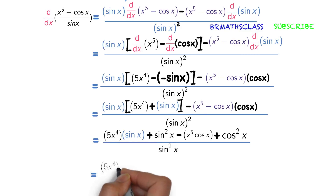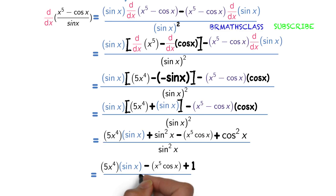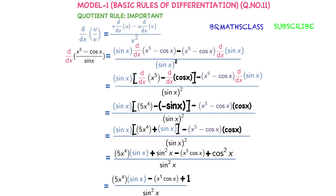Now continuing: 5x⁴ sin x minus x⁵ cos x. We know the formula sin²x plus cos²x equals 1. So this simplifies to 5x⁴ sin x minus x⁵ cos x plus 1, whole divided by sin²x. Therefore, the derivative of (x⁵ minus cos x) divided by sin x is equal to (5x⁴ sin x minus x⁵ cos x plus 1) divided by sin²x.